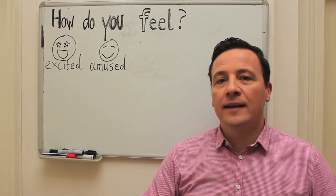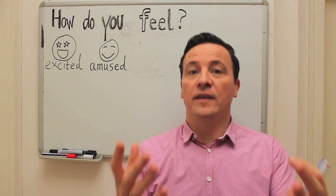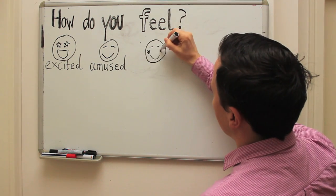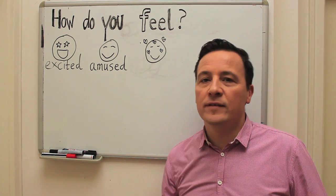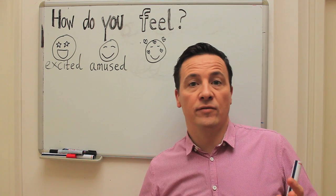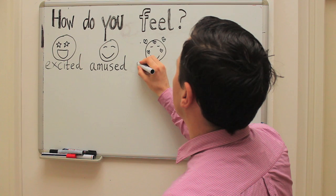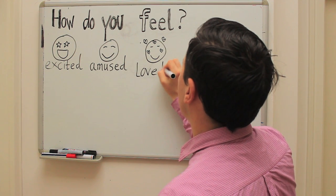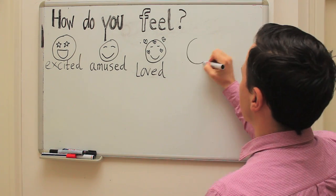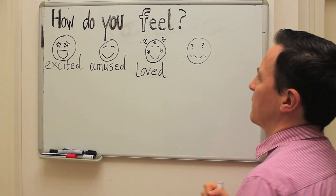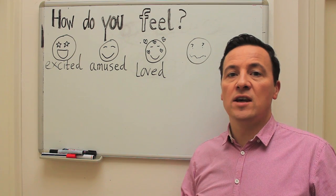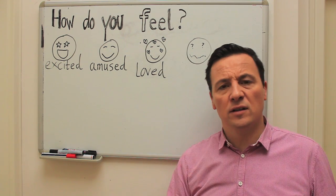Next adjective — I hope this is something that you do feel. How do you say 'geliebt' in English? You would say 'loved' — I feel loved. Next adjective: how do you say 'verwirrt' in English? You say 'confused' — I feel confused.